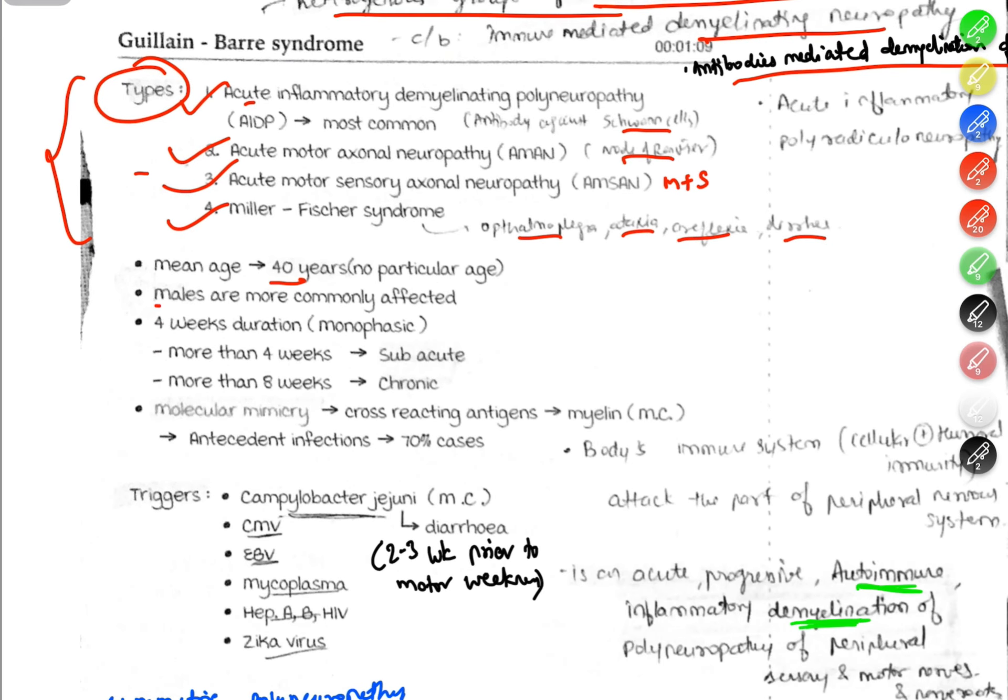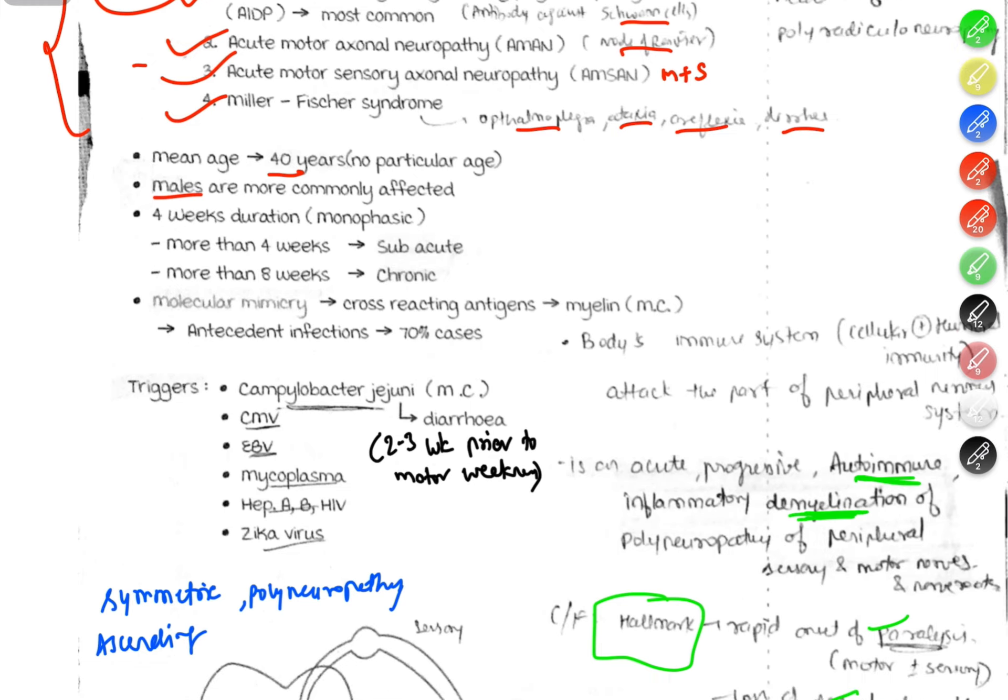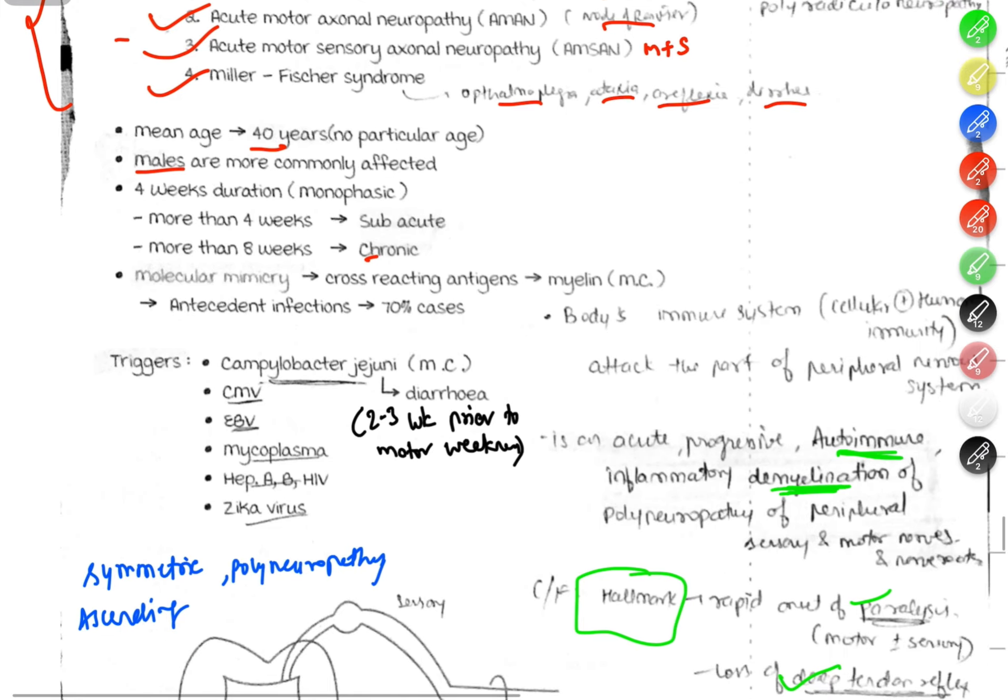The mechanism is molecular mimicry. Similar to rheumatic fever, there is initially a bacterial or viral infection against which antibodies form. Then these antibodies will cross-react with myelin cells and destroy them.